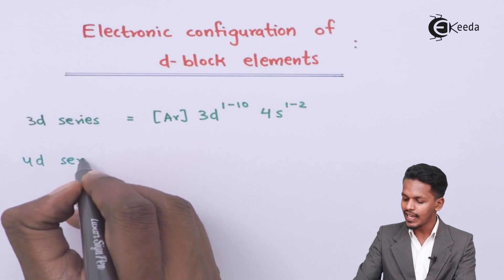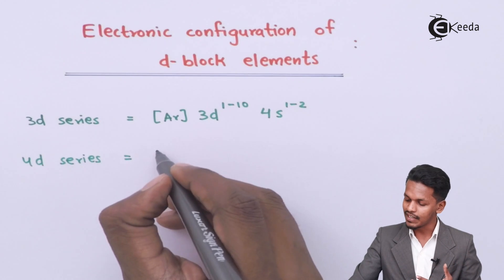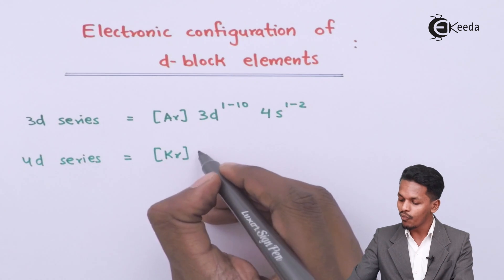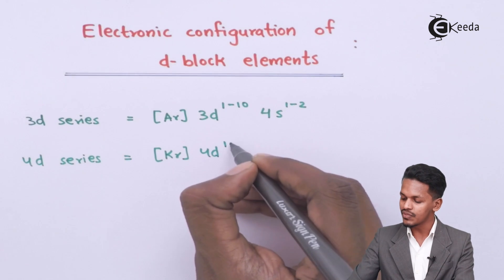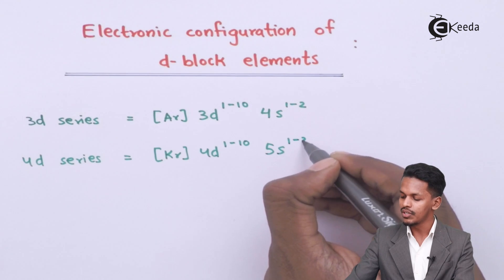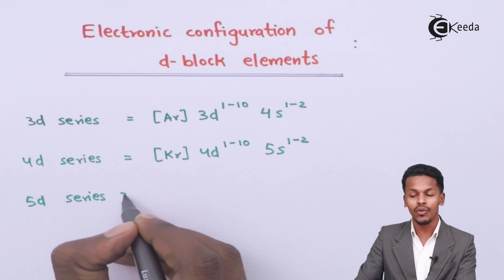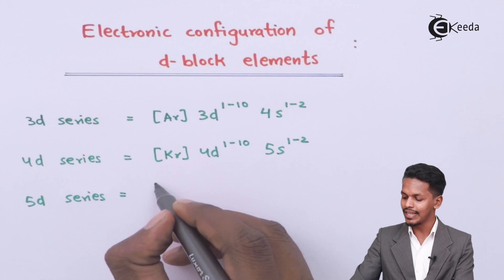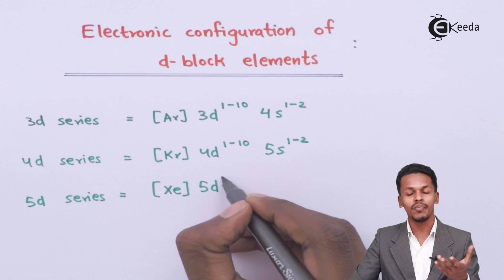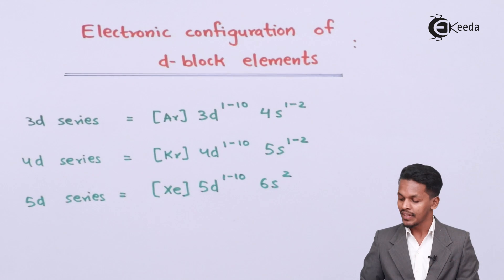For the 4d series, the general electronic configuration is written as [Kr] 4d¹⁻¹⁰ 5s¹⁻². Since the 3d series used argon and 4s, the 4d series uses krypton as the noble gas core, with 4d ranging from 1 to 10 electrons and 5s from 1 to 2 electrons. For the 5d series, the general electronic configuration is [Xe] 5d¹⁻¹⁰ 6s².